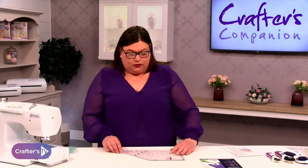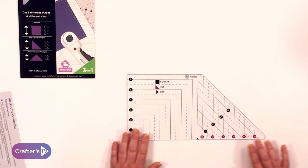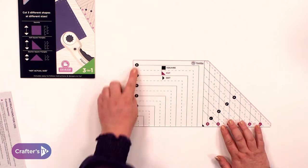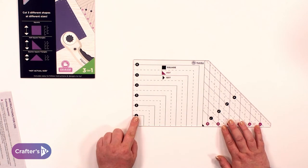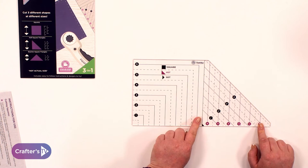Inside the packaging, you will get your ruler. If we look at this side, this is the side where we're going to cut the squares. On this side are your two types of triangles. We've got the half-square triangles in the pink.